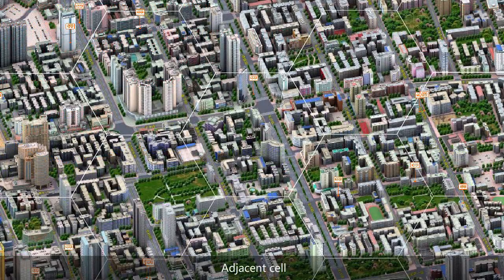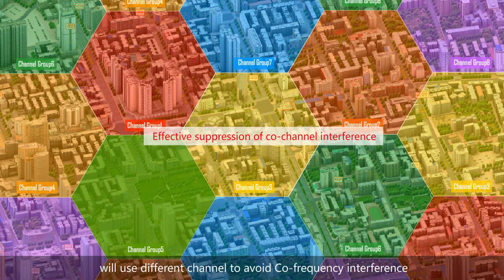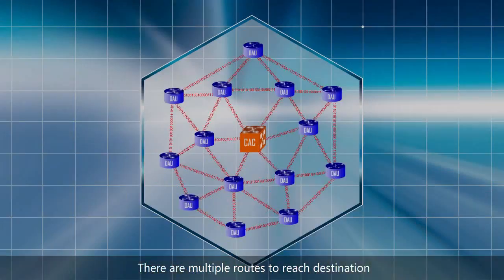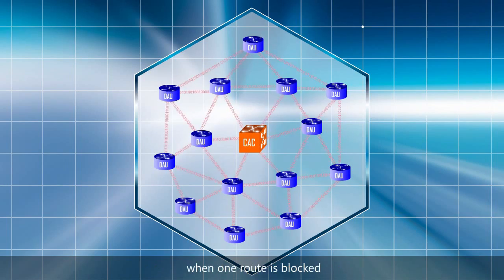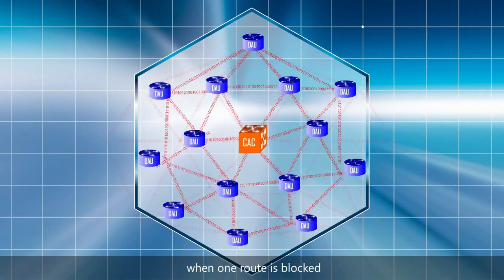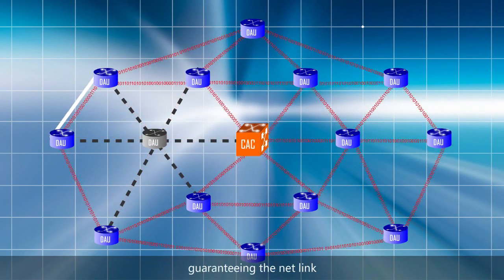Adjacent cells will use different channels to avoid co-frequency interference. There are multiple routes to reach a destination. When one route is blocked, a second route will be selected automatically, guaranteeing the network link.